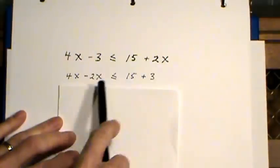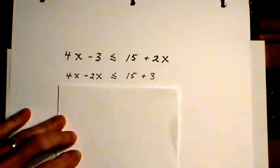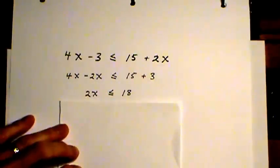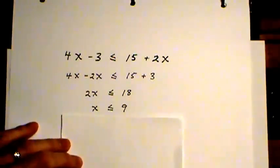And I remove the 2x by subtracting 2x from the left side. That brings us down to 2x less than or equal to 18. And then, dividing both sides by 2, x is less than or equal to 9.